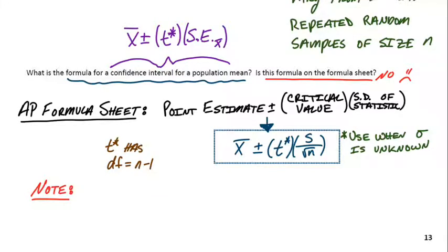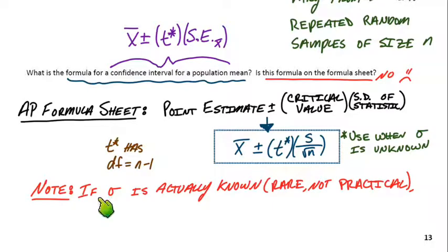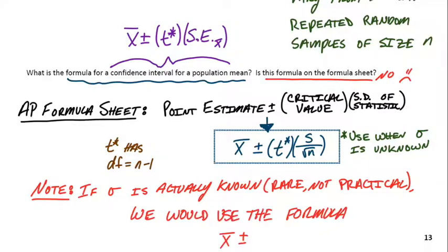If for some reason you did know what sigma was, just for an example problem, it's not practical, but we would use X bar plus or minus Z star times sigma over the square root of N. So just as a side note, this one would be applicable if we somehow knew what sigma was. But the vast majority of the time, we're not going to know what sigma is. So we're going to have to use the sample standard deviation, S, and T star to make our interval. For all practical intents and purposes, this would be our equation for confidence intervals for means.